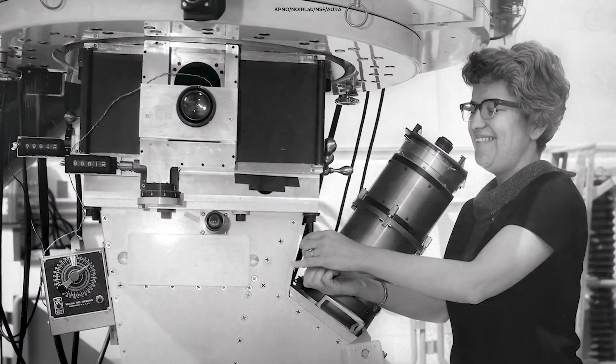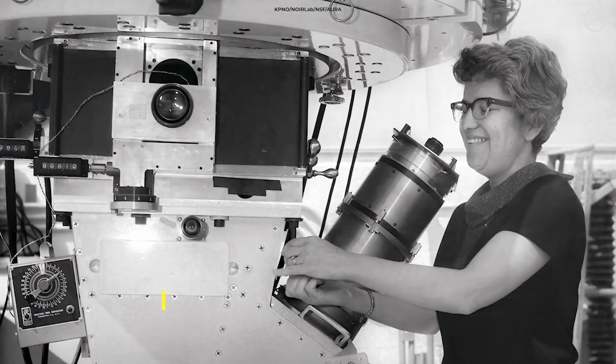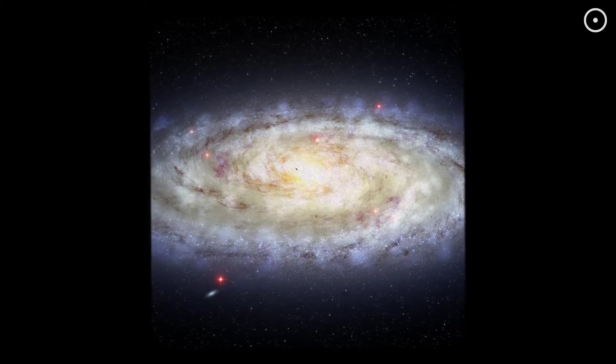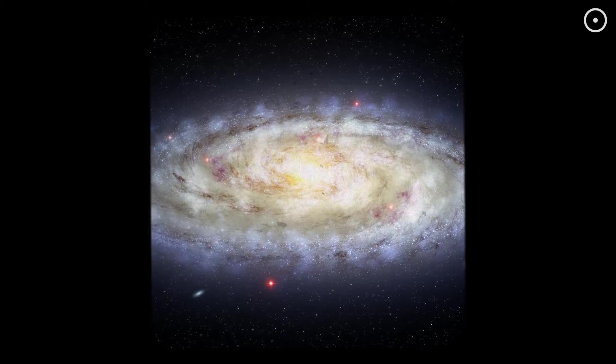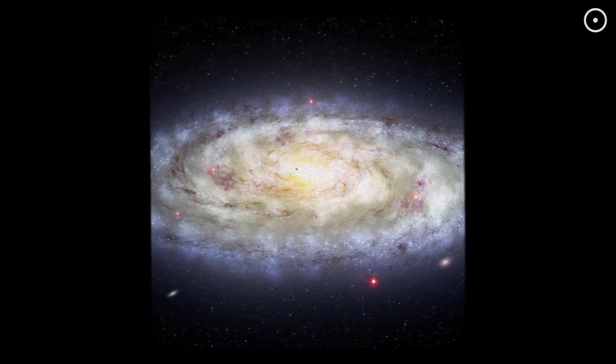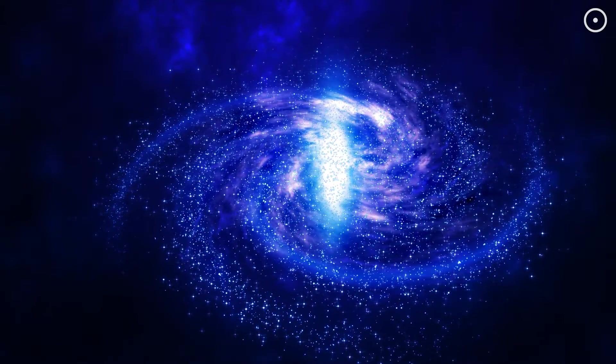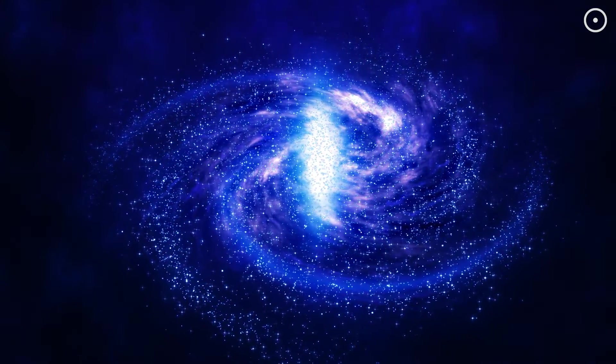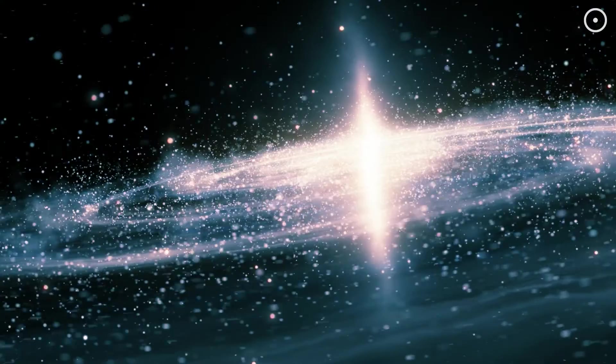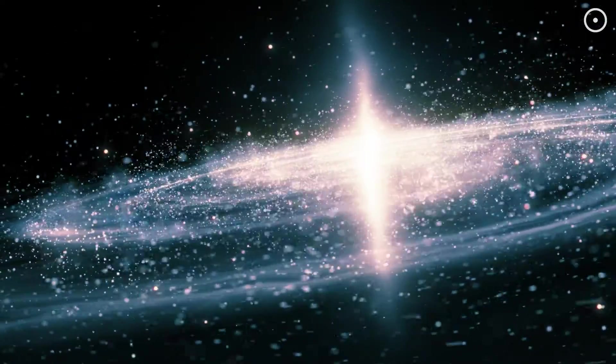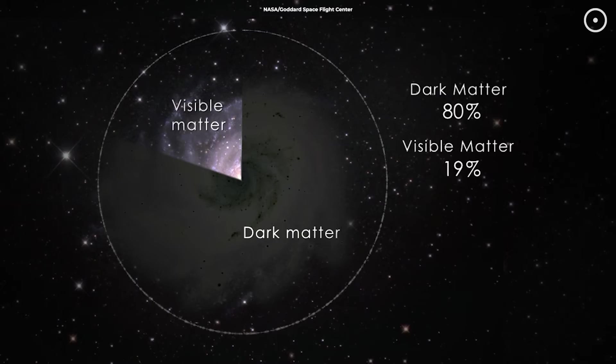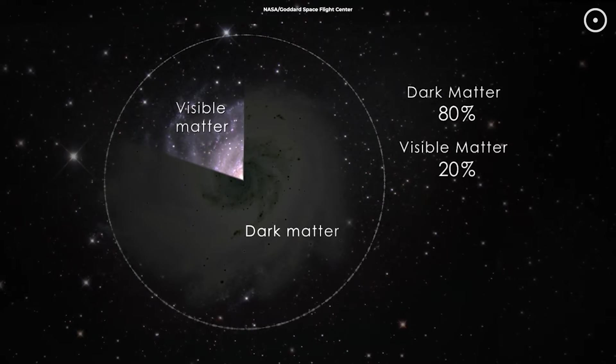Fast forward a few decades, and another brilliant astronomer Vera Rubin made a similar discovery. She was studying the rotation of galaxies and found that stars on the outskirts were orbiting just as fast as those near the center. According to the laws of physics, this shouldn't happen unless there was a lot more mass than what we could see. These discoveries were groundbreaking. They suggested that there's a lot more to a galaxy than meets the eye. In fact, it turns out that what we can see is just a tiny fraction of the total.